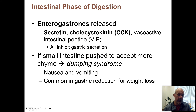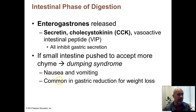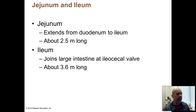As chyme comes in from the stomach passing through the pyloric sphincter into the duodenum, only a little bit is supposed to come in at a time. You don't want an overload of chyme coming into the duodenum — if it does, dumping syndrome will occur where you'll feel nauseous and then vomit. In people who have gastric bypass surgery to help them lose weight, this dumping syndrome occurs more easily.